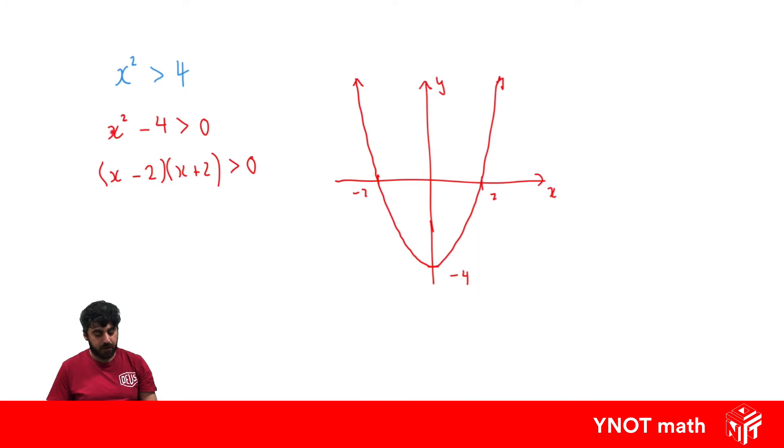If we have a look at the original quadratic inequality, once we moved everything to one side, we want to know where the equation of the graph is greater than 0. Another way to think about it is just where is it above the x-axis.